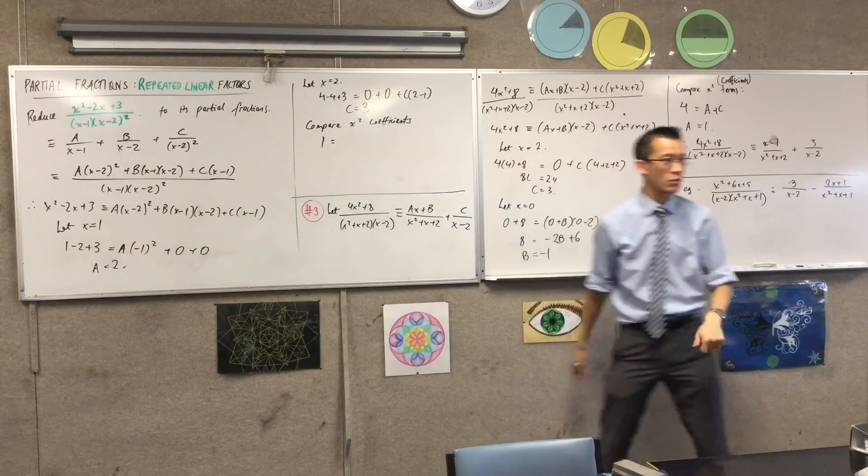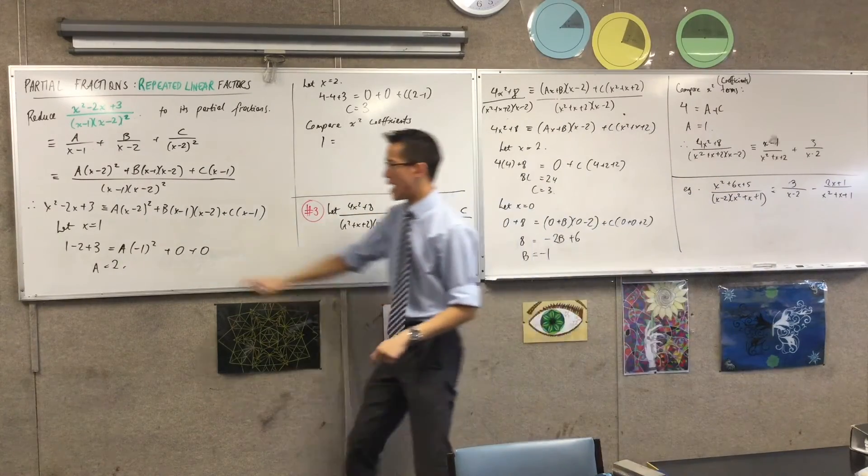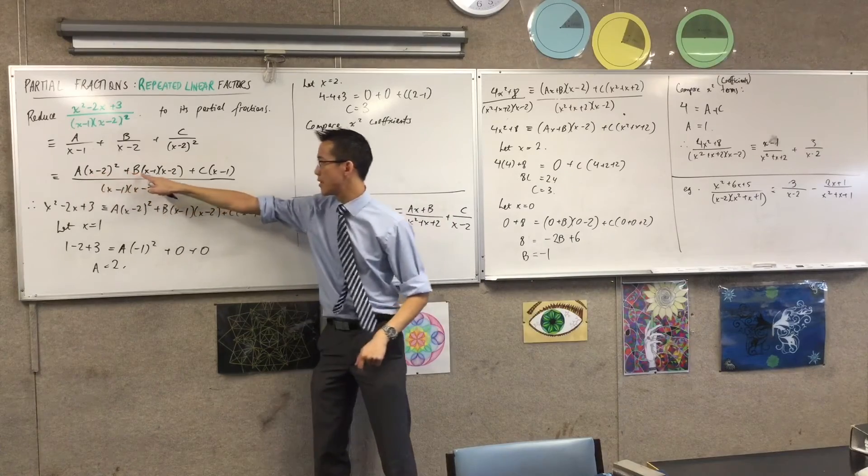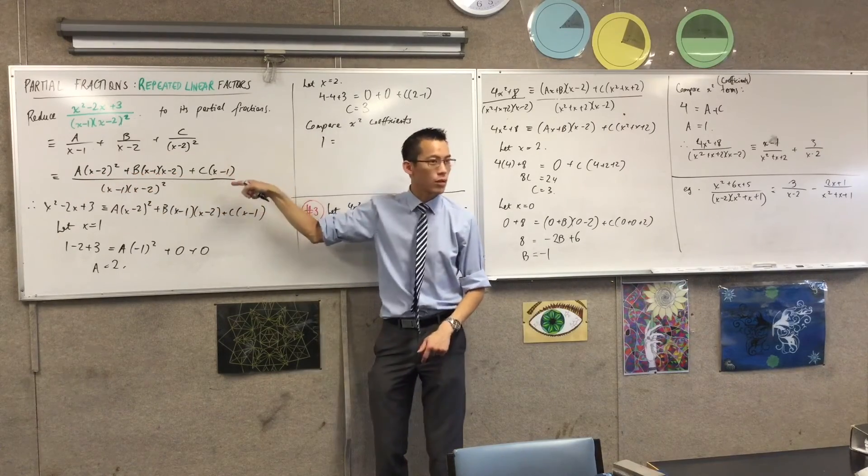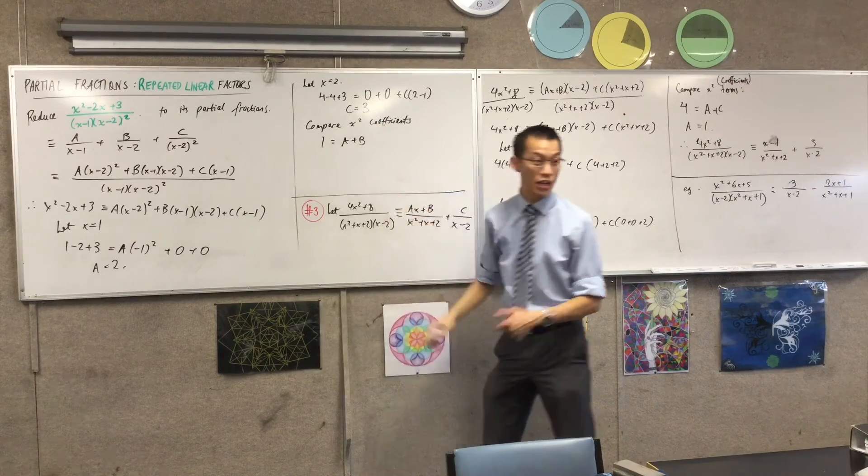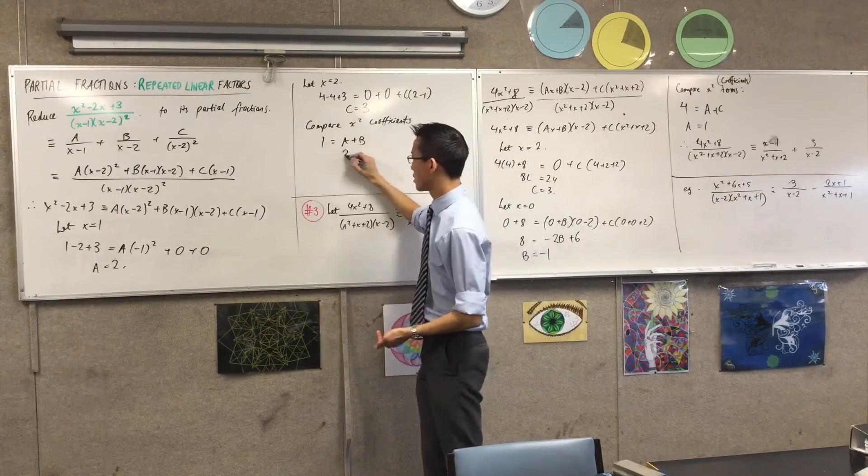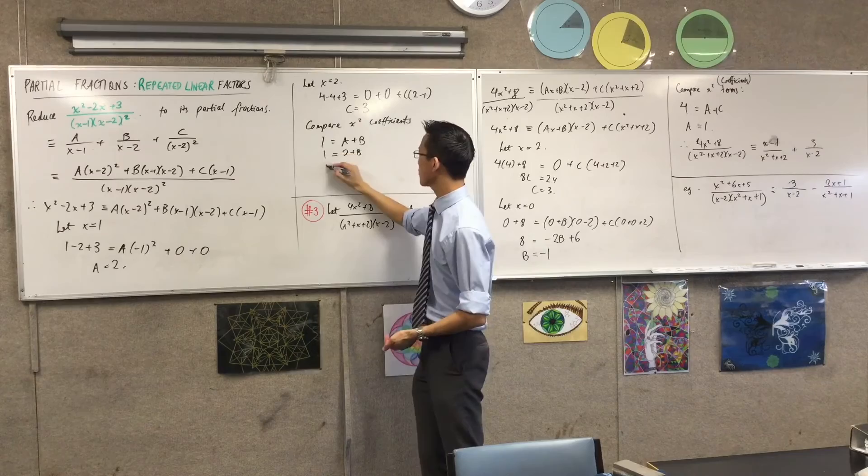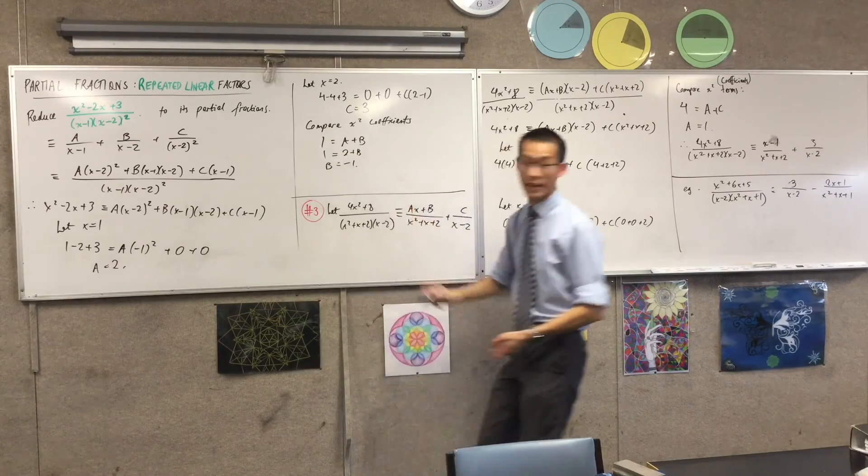What about on the right-hand side? How many terms contribute to the x squared? A and B. Yeah, you'll get an A here, and a B there, x squared, and you won't get any C, will you? Okay? So, A plus B, except I already know what A is. So, that's 2. Okay, happy times.